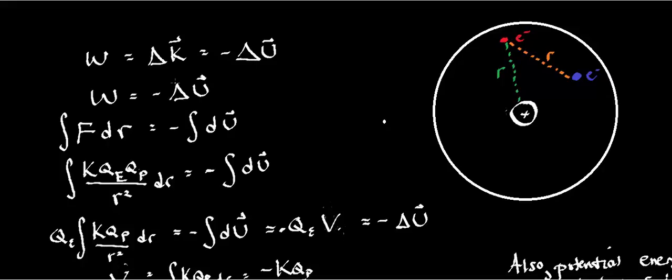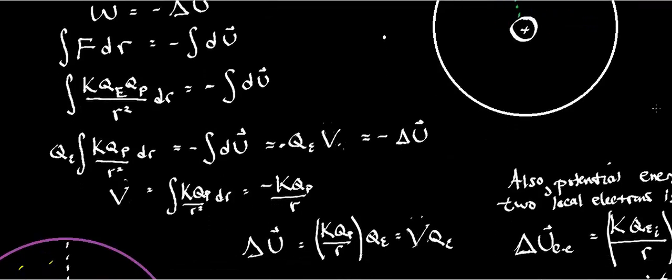So we're going to start with just a definition. The work is equal to the change in kinetic energy. That's the work kinetic energy theorem. What we also know is from conservation of energy that the change in kinetic energy in the absence of springs is equal to the negative change in potential energy, which just implies work is equal to the negative change in potential energy.